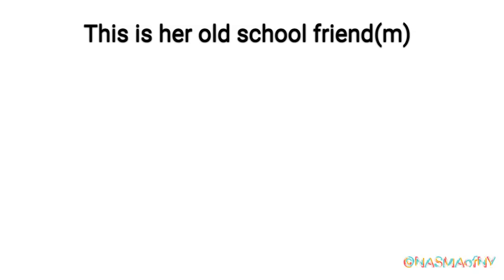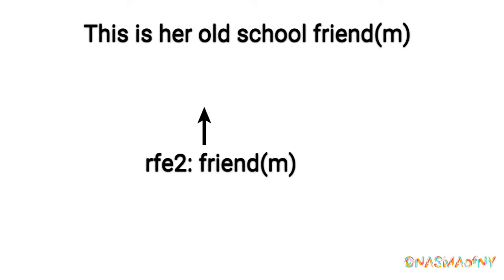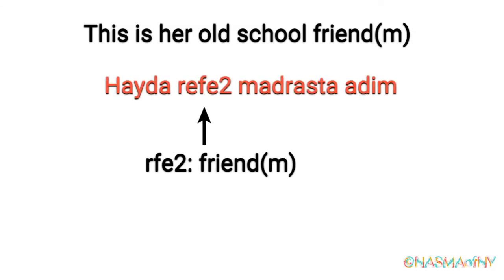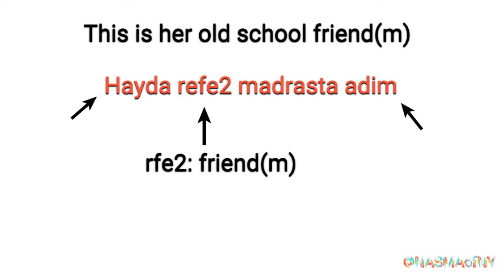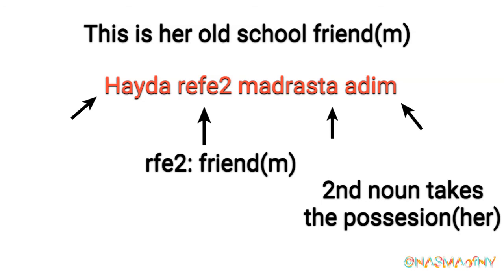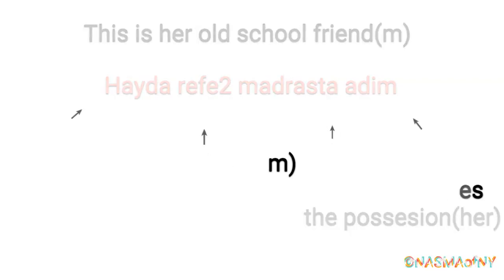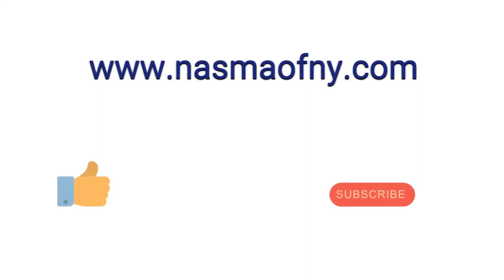Another example: this is her old school friend — assuming friend is masculine. Friend is rafi'i, so my sentence translates to hayda rafi'i madraste adim. My first noun is masculine, so my demonstrative and adjective are also masculine, and my second noun took the possession 'her.' Always remember: your first noun determines the gender of your sentence, and your second noun carries the possession. Thank you so much for watching!